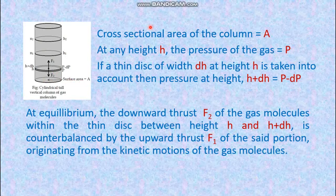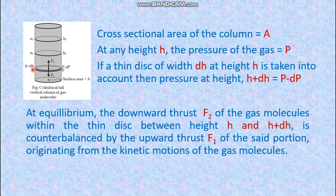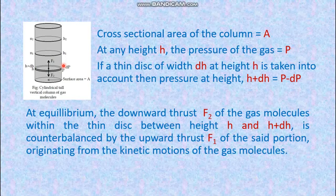The cross-sectional area of the column is A. At any height H, the corresponding pressure is P. If a thin disk of width dH at height H is taken into account, then the pressure at height H plus dH equals P minus dP.